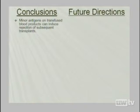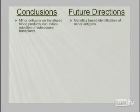Coming to conclusions: we can safely conclude — at least in mice — that minor antigens on transfused blood products induce rejection of subsequent transplants. We reject the notion that the trends seen clinically are simply a matter of patients with more transfusions having more severe illness that damages the bone marrow microenvironment, because these experiments are done on animals with no bone marrow disease. We are also launching a genetics-based identification of the minor antigens responsible.